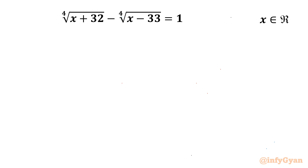Welcome to Infigyan, my dear friends. In today's video we have one very interesting question from radical equations: the 4th root of (x+32) minus the 4th root of (x-33) equals 1. We have to find out all real solutions. Let's get started with our substitution straight away.